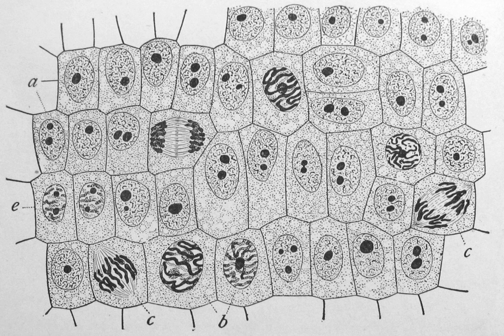Many cells also have structures which exist wholly or partially outside the cell membrane. These structures are notable because they are not protected from the external environment by the semipermeable cell membrane. In order to assemble these structures, their components must be carried across the cell membrane by export processes.